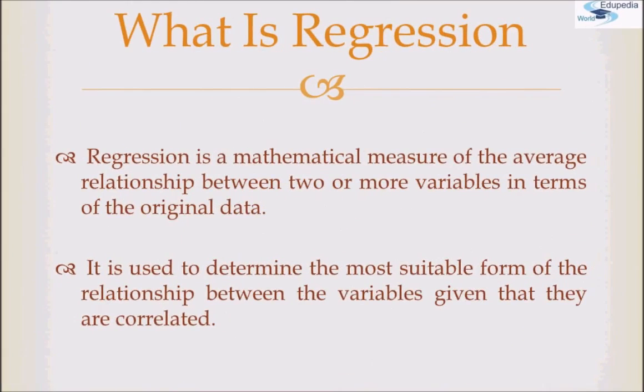A formal definition of regression: it is a mathematical measure of the average relationship between two or more variables in terms of the original data. It is used to determine the most suitable form of the relationship between variables, given that they are correlated.